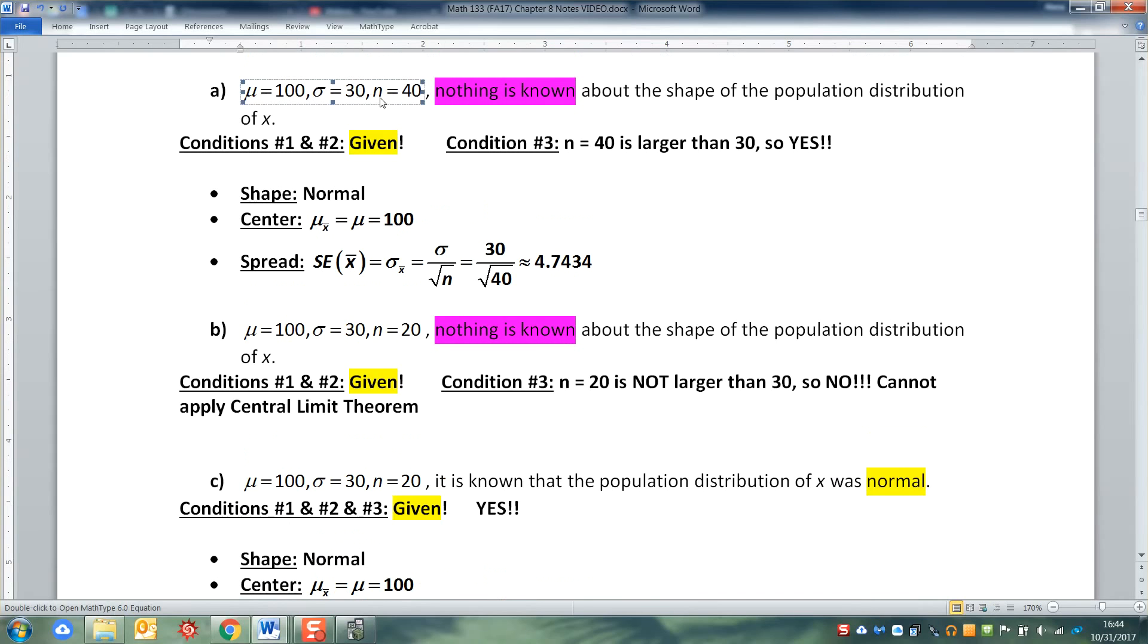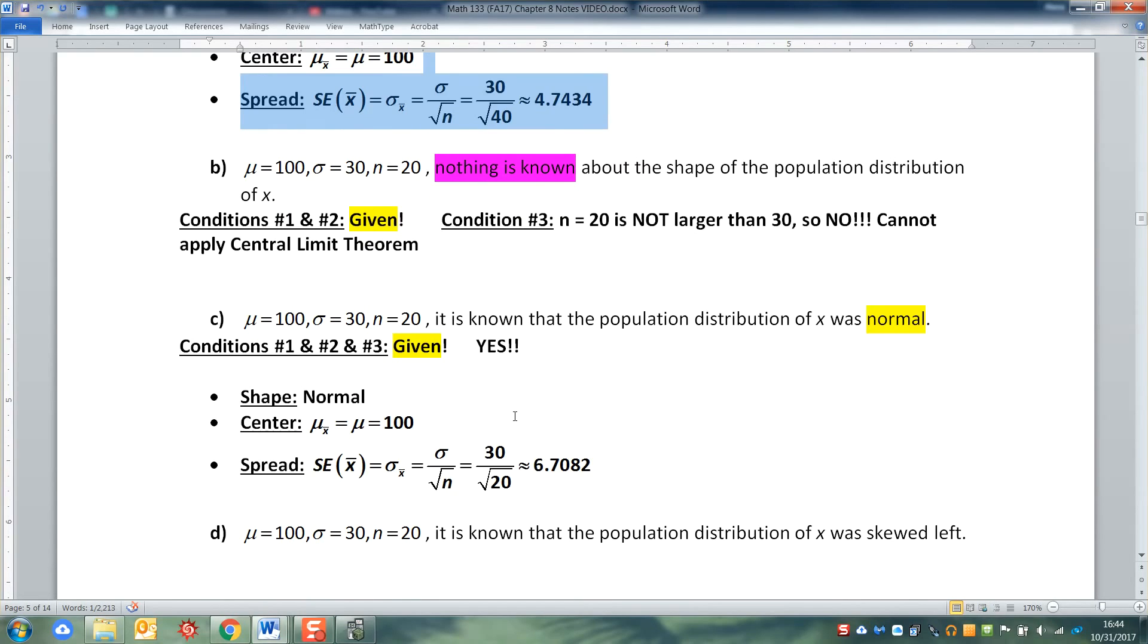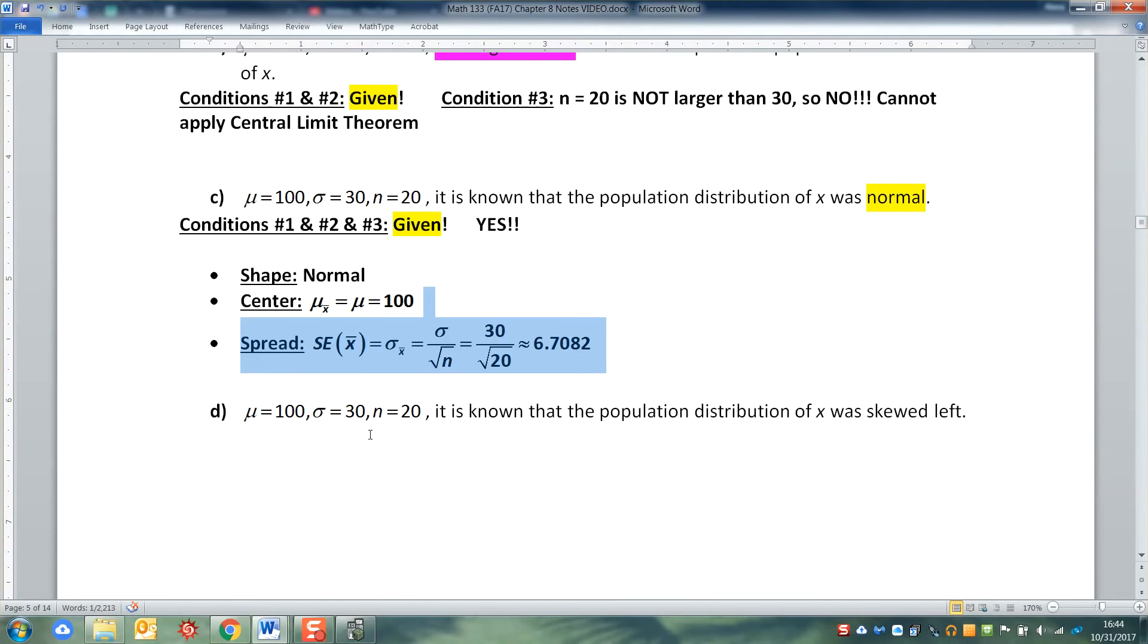It's different because, of course, n is not as large on this one as it is on the one above for A. A has a larger n, so notice it has a smaller spread. The spread is only 4.734 on this one, whereas down here, the spread is 6.708 because n is smaller. The larger the n, the smaller the spread.